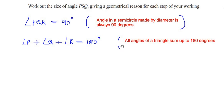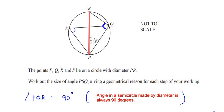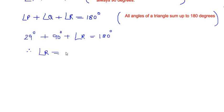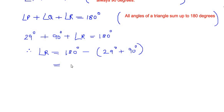The geometrical reason for this step is: all angles of a triangle sum up to 180 degrees. Angle P is given as 29 degrees and angle Q is 90 degrees. So: 29 degrees plus 90 degrees plus angle R equals 180 degrees. Therefore, angle R equals 180 minus 29 minus 90, which gives us 61 degrees.